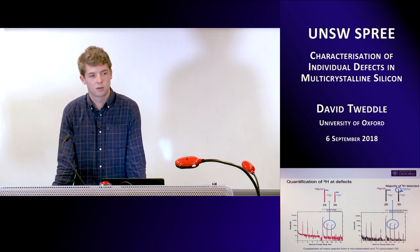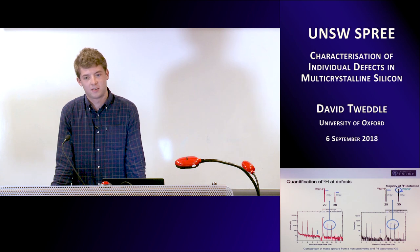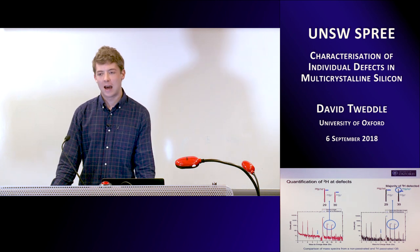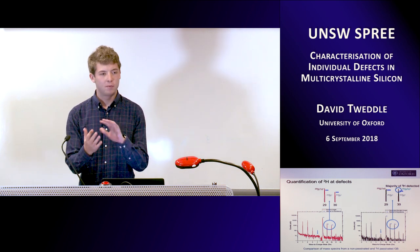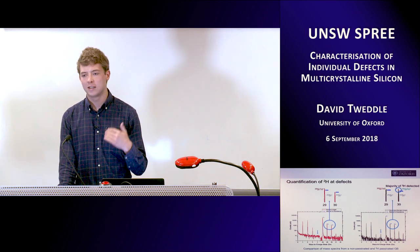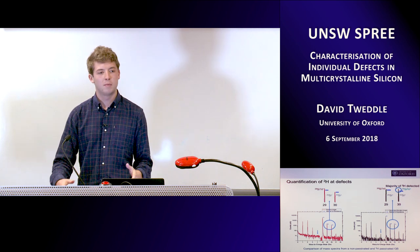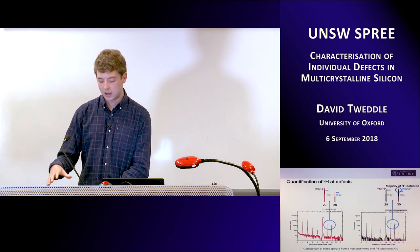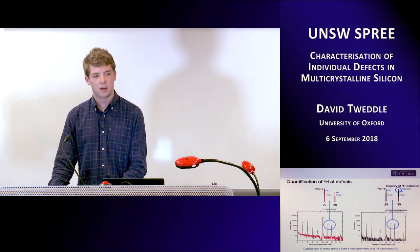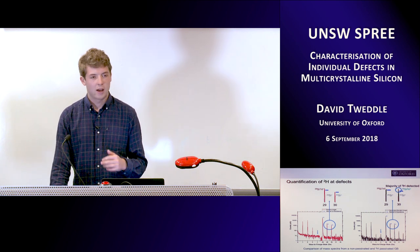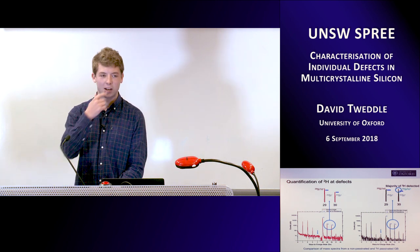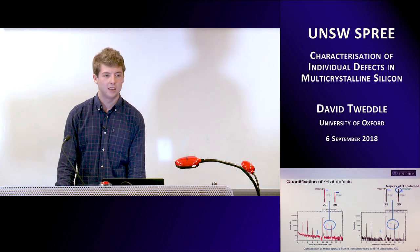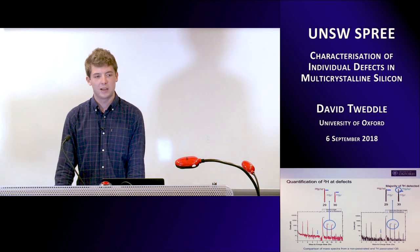With your atom probe results you have these 3D maps — how accurate are the positions you get from those? It depends. You do a reconstruction and you can model the shape of your tip using a couple of different techniques. What I use is how the voltage increases throughout the run to determine the size of your needle. You can build it up quite accurately and also use poles in your data to help with your reconstruction. People say you can go maybe around 0.5 nanometres spatial resolution, but it depends on the reconstruction. You can accurately see dislocations as 2D defects — it's pretty good.